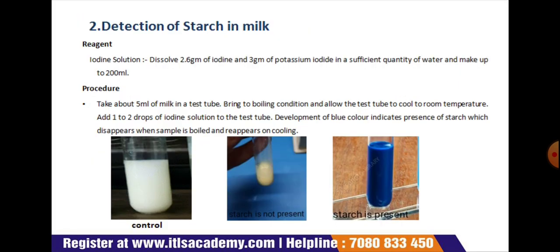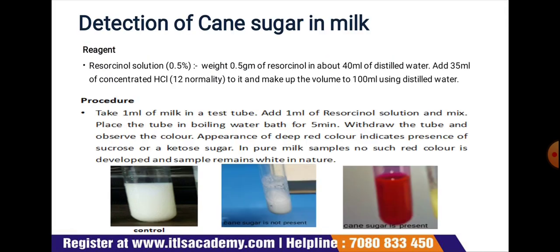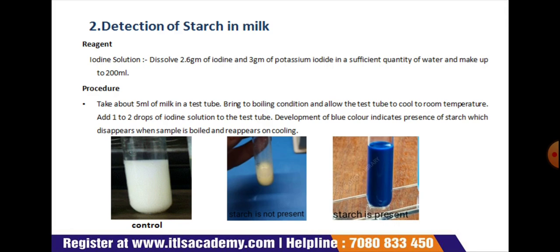Next test is the detection of starch in milk. For this we need an iodine solution. To prepare it, dissolve 2.6 gram of iodine and 3 gram of potassium iodide in sufficient quantity of water and make up to 200 ml. This is our iodine solution ready for testing.